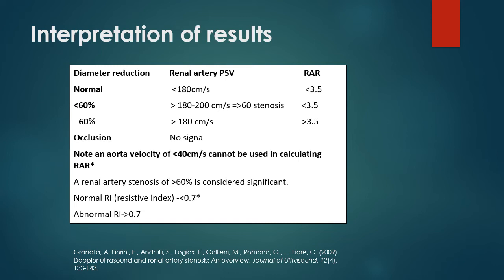To calculate your renal aortic ratio, take the highest renal artery velocity divided by the aortic velocity at the region of the SMA. Note that an aortic velocity of less than 40 centimeters per second cannot be used in calculating a renal aortic ratio. A renal artery stenosis of greater than 60% is considered significant. Your normal RI should be less than 0.7; an RI greater than 0.7 is abnormal. Keep in mind that different vascular labs have different criteria.